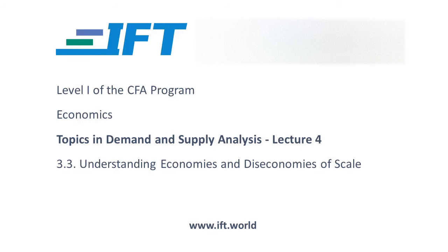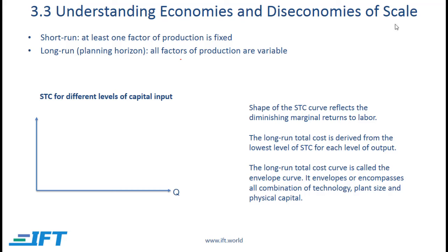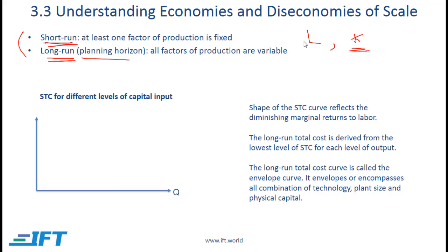We are now at the final subsection in this reading: understanding economies and diseconomies of scale. First, a quick refresher on the distinction between short run and long run. In the short run, at least one factor of production is fixed, and in the long run — also called the planning horizon — all factors of production are variable. In our simplistic world considering two factors of production, labor and capital, typically in the short run capital is fixed and labor is variable, whereas in the long run both labor and capital are variable.